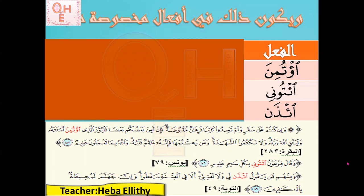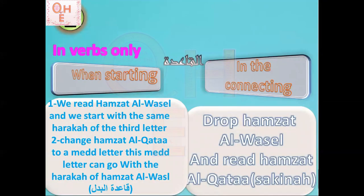This is when we connect. When we start, we read Hamzat al-Wassl and start with the same haraka of the third letter, then change Hamzat al-Qata to a madd letter. This madd letter goes with the haraka of Hamzat al-Wassl — we call it Qa'idat al-Badal. I explained Qa'idat al-Badal in detail in the chapter of Mudud. I will put that video as a recommendation at the end of this video, insha'Allah.